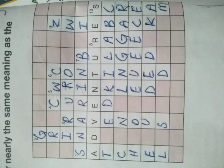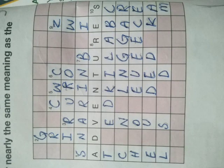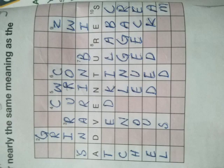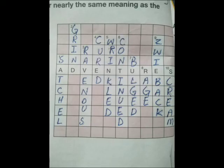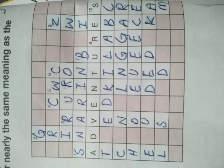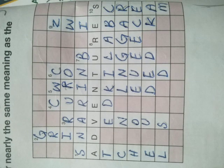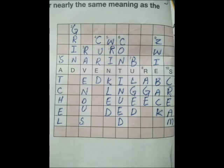Covered in lines and folds — yani lines aur folds ke zariye kisi cheez ko dhap dena. Is ko kya kahenge? Wrinkled. Next one is sixth: kept going — jaari rakhna. To is ko hum kar denge: continued. Continued ka matlab hota hai jaari rakhna. Seventh one: stuffed full — yani kisi cheez se bharay hona. To bulged, B-U-L-G-E-D.